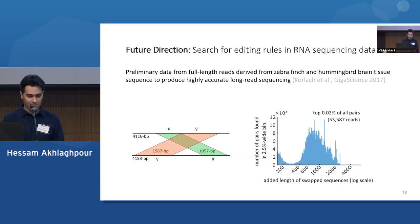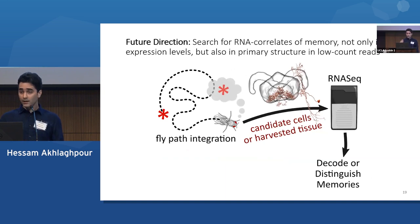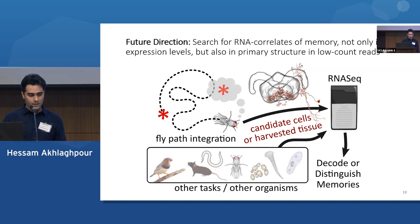In the interest of time, I'm not going to be able to explain what this is. And another direction that I'm pursuing is, I think, one of the most promising places to search for these kinds of editing rules is in learning and memory paradigms. And I'm actually spending most of my post-doctoral work working on fly path integration. And so I want to, in the future, sequence candidate cells and look for RNA correlates of memory, not just in the expression levels of known transcripts, but also in the exact sequences of RNA strands that we sequence. And obviously, this is not limited to fly path integration. I want to look at other organisms and other tasks.